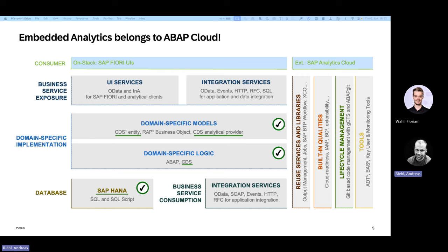There is an interface view for the flights, and this interface view — this CDS view — we are of course using as well when we build our analytical data model. That means we can now build an analytical model that directly operates on the live data that is in this system. And this is not only the case in a Steampunk system, but also in an embedded Steampunk system, and therefore in S/4HANA, for example.